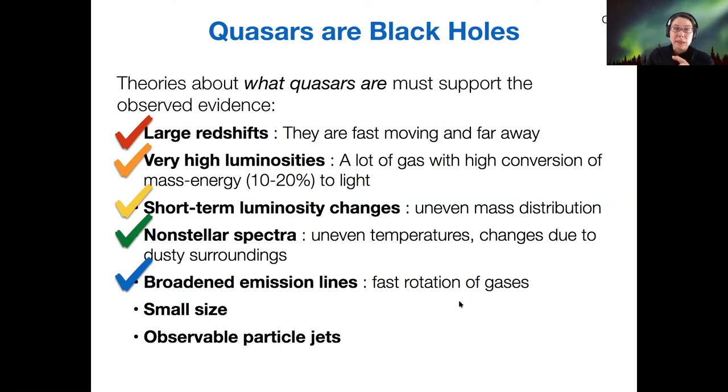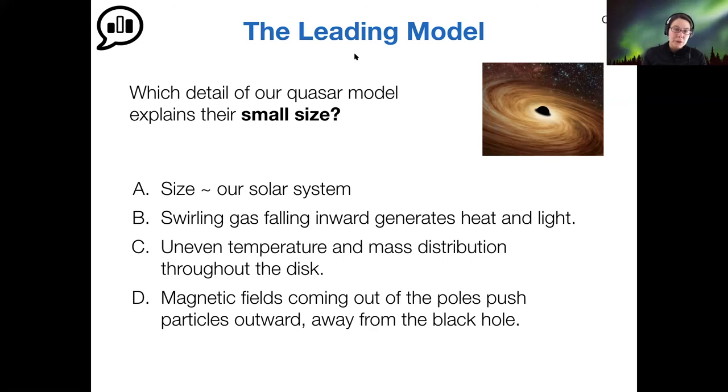We've got fast rotation of gases helping to explain our broad emission lines. And so how do we explain the small extent of this object? The reason we know that the size is small is because we've looked at those light fluctuations. And that has showed us that the size of the source of energy must be around the size of our solar system. This is the analogy of if the sun gets brighter, we see the front side of it first and the back side of it bright and last.